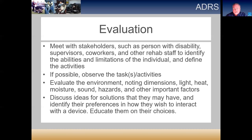During the evaluation we look at the environment — dimensions like heat, vibration, and electromagnetic interference, which is especially relevant for FM systems for people with hearing impairment. We also discuss ideas for solutions that the person might have had, or that a coworker, supervisor, teacher, or caregiver has suggested, to identify specific preferences. We also educate them on technology choices that might fill the gaps, and if possible, have them physically try out a device.